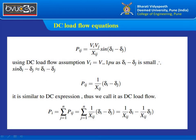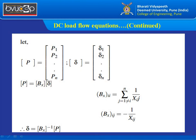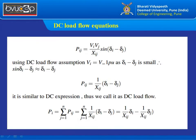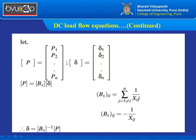So Pij = (1/Xij)(δi − δj). In matrix form, the power vector P equals Bx times the angle vector δ, where Bx is the susceptance matrix obtained from the bus admittance matrix. The diagonal element Bxii is the summation of 1/Xij for all elements connected to that bus, and the off-diagonal element Bxij is −1/Xij. The angle vector δ can be directly calculated as Bx inverse times P.